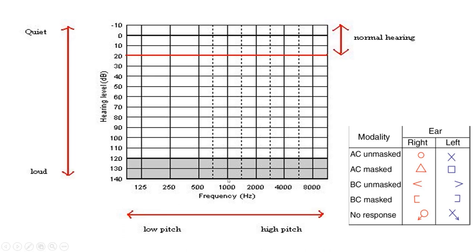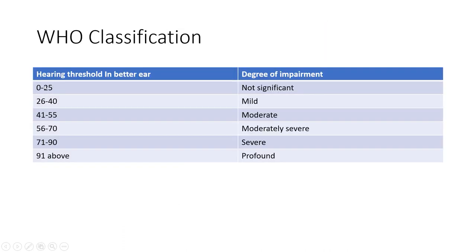For another example, if for 1000 hertz you can hear 30 decibels and louder but not less than 30, then the threshold for 1000 hertz is 30 decibels. For a normal ear at any frequency, you should be able to hear sounds less than 20 decibels. If you can hear from 0 to 25 decibels, that's not a significant impairment. But if you require at least 26 decibels to hear, that is mild hearing loss (26–40 dB), and if you require more than 90 decibels, that is profound hearing loss.